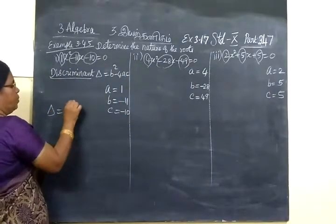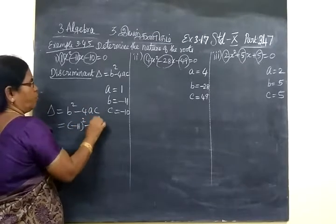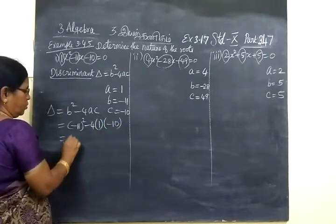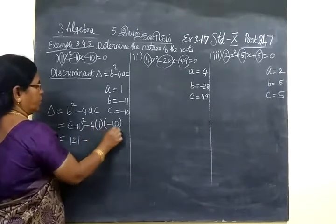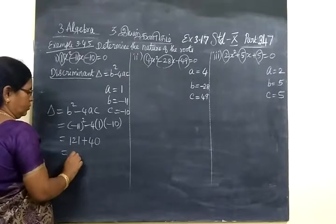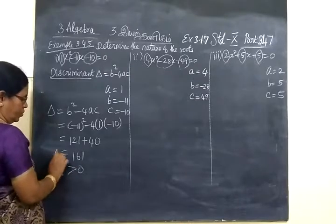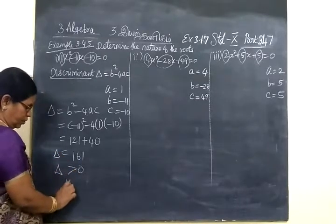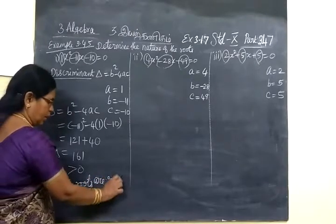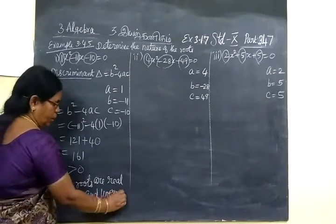Delta equal to b square minus 4ac. B is minus 11 whole square minus 4 bracket A times C minus 10. So 121 minus minus plus, then 10 fours are 40, equal to 161. So delta value greater than 0. If delta greater than 0, then the roots are real and unequal.